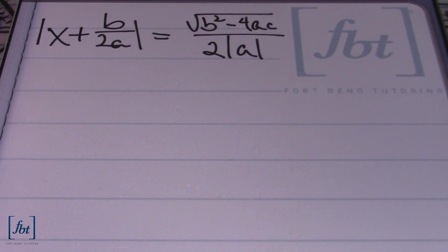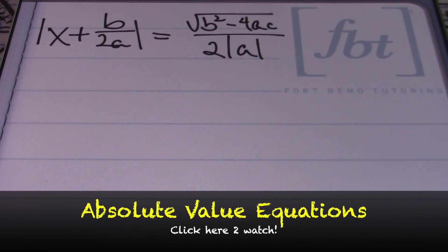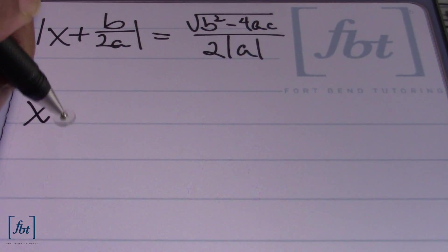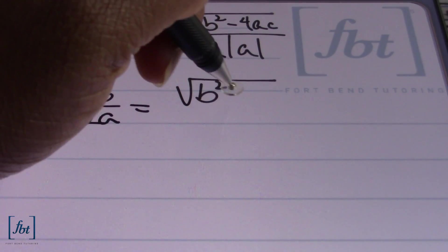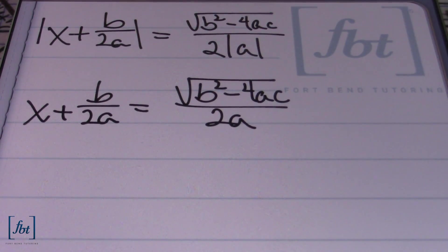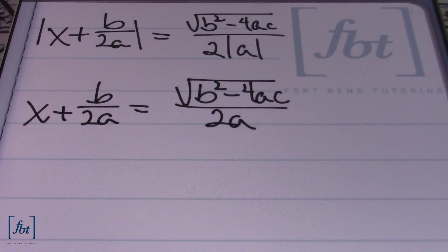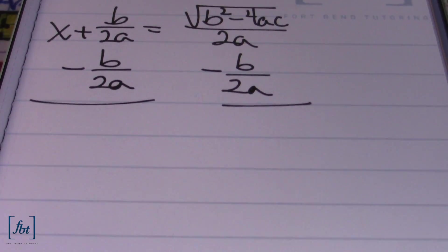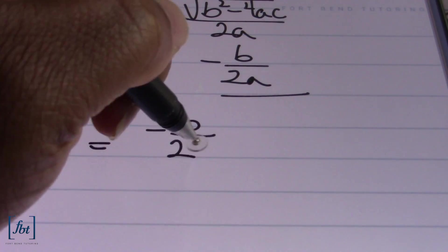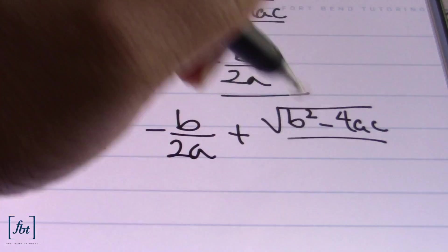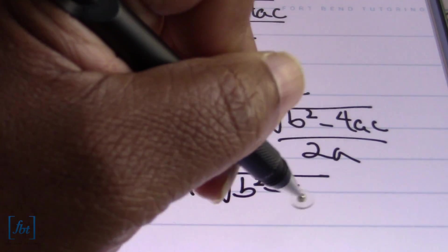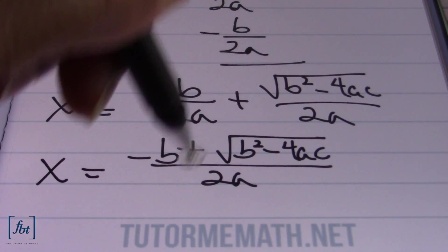Since we know this equation is valid, we're going to set up two different equations because the absolute value represents distance to zero — you can be equidistant either to the left or right of zero. My first equation is x plus b over 2a equals the square root of b squared minus 4ac all over 2a, dropping all the absolute values assuming everything is positive. Subtracting b divided by 2a from both sides gives us x equals negative b over 2a plus the square root of b squared minus 4ac over 2a, which combines to negative b plus the square root of b squared minus 4ac all over 2a. So far we have half of the quadratic formula.